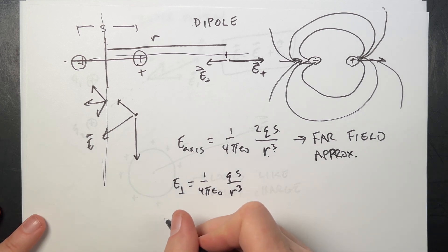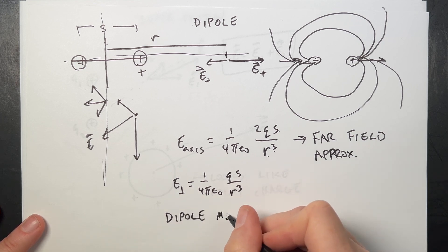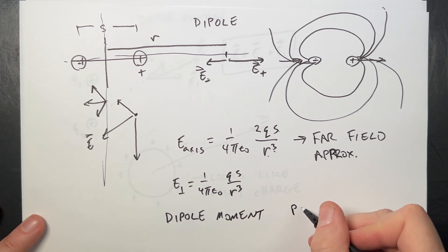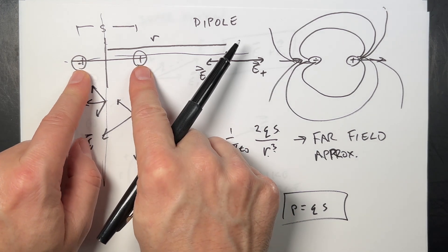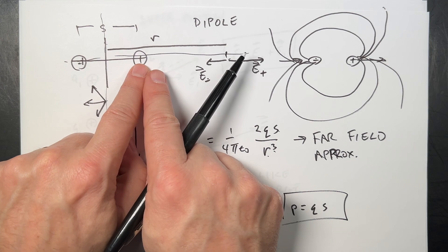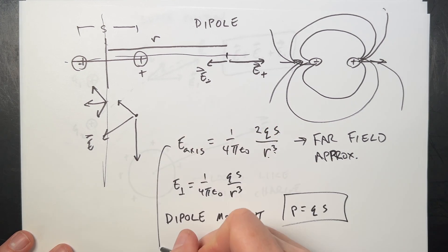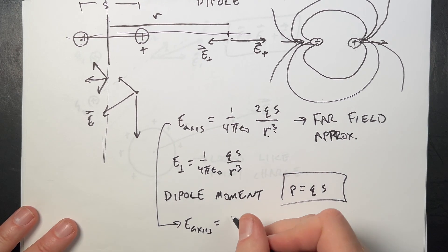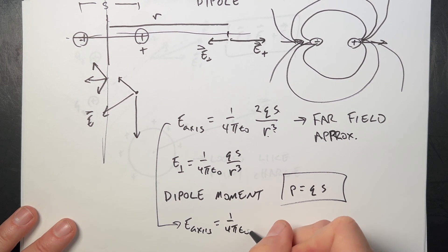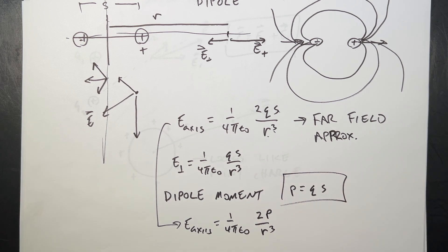We can also define the dipole moment P = QS — it captures both the magnitude of the charge and the separation. With that, E_axis = (1 / 4πε₀) × 2P / R³, simply replacing QS with P. It's just one way to describe what the dipole is.